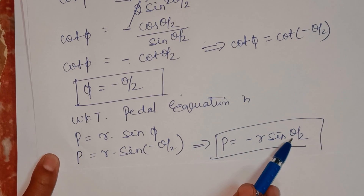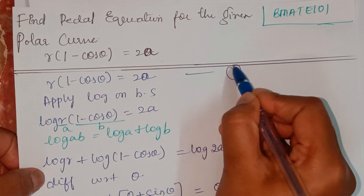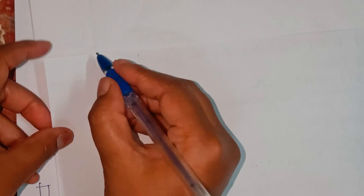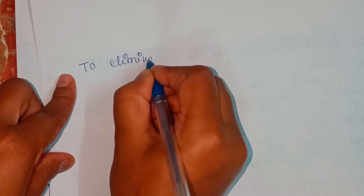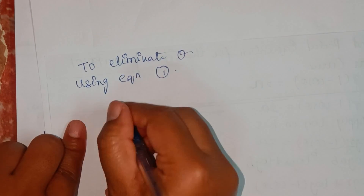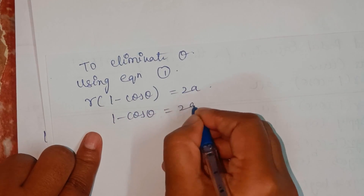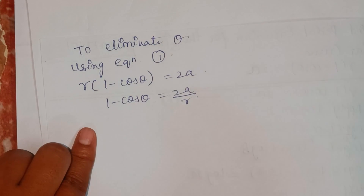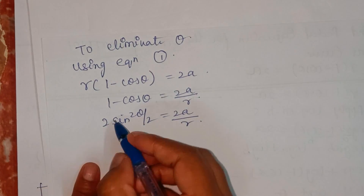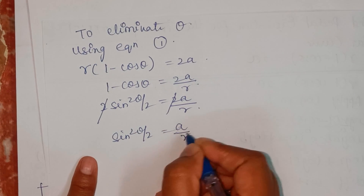To eliminate theta, I will use the original equation as equation 1: R(1 minus cos theta) equals 2a. From this, 1 minus cos theta equals 2a/r. We also know 1 minus cos theta equals 2 sin²(θ/2), so 2 sin²(θ/2) equals 2a/r. Cancelling the 2s gives sin²(θ/2) equals a/r.